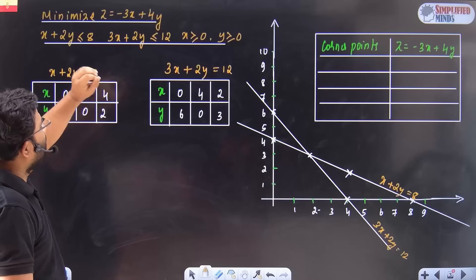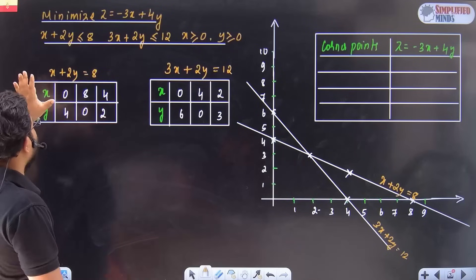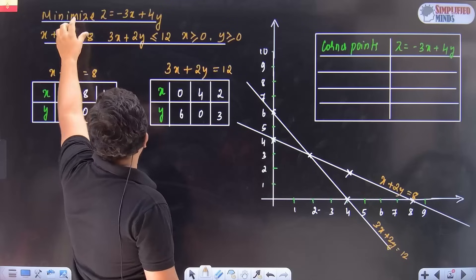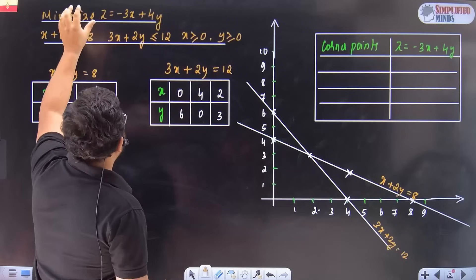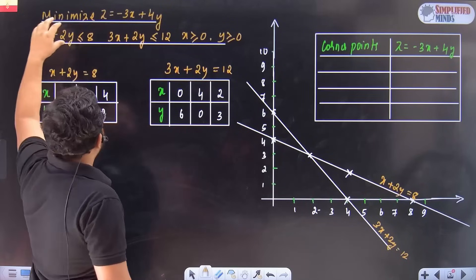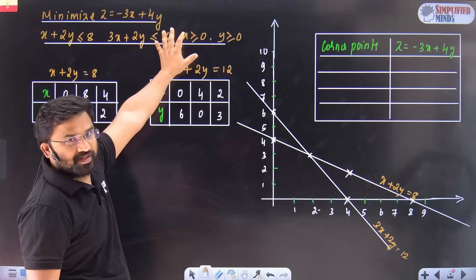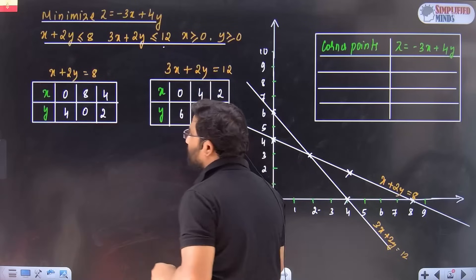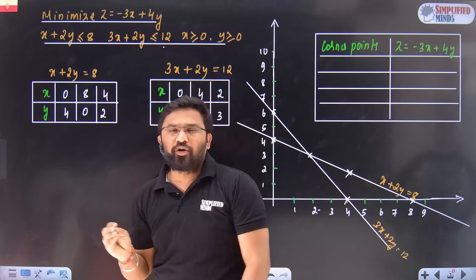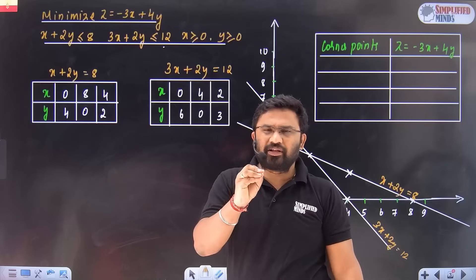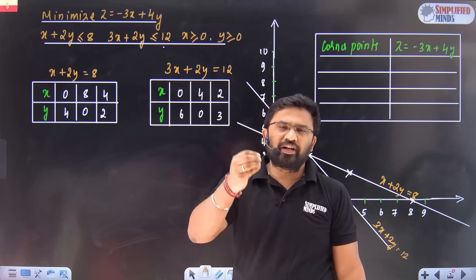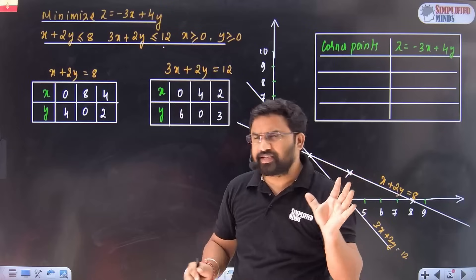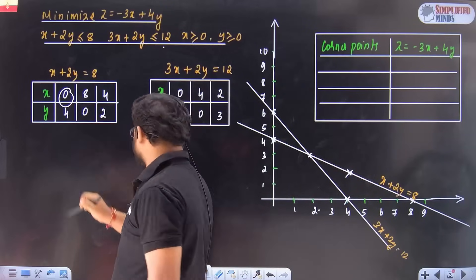Now, x plus 2y — they give the constraints along with the objective function. I have to maximize or minimize given these conditions. For the first constraint, x plus 2y is less than or equal to 8, treat it as x plus 2y equals 8 and choose the intercept points. You've already learned this in lower classes — always best to choose x as 0 to get the y-value.